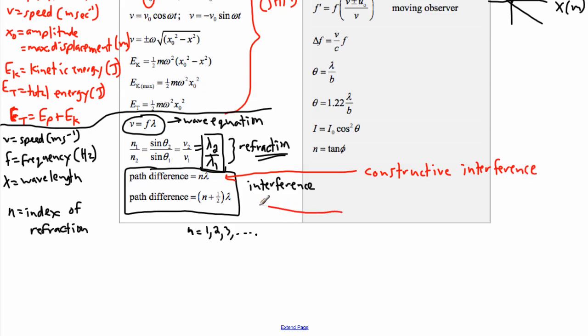And this one right here, so this tells you, let's say it's one plus a half, so that'll be 1.5 lambda or 2.5 lambda or 3.5 lambda, then you get destructive interference. So that's how we use these ones. It helps to know that though, that the first one is constructive, the second one is destructive.